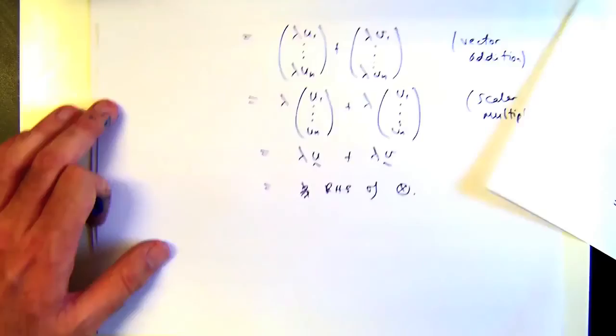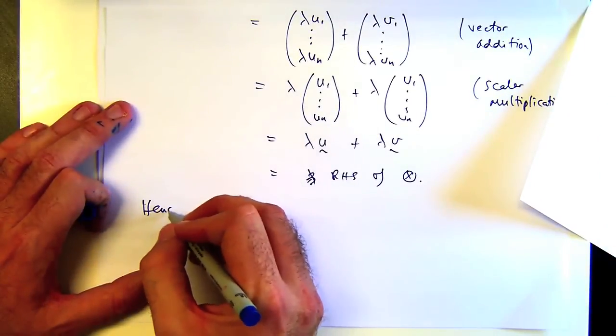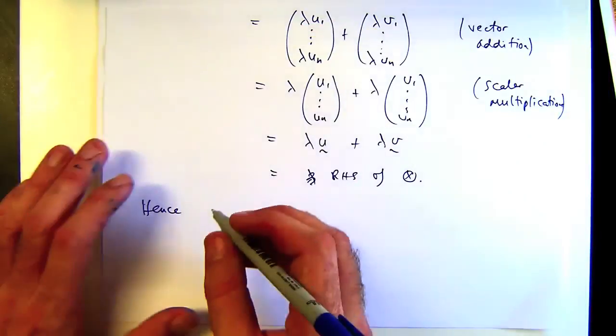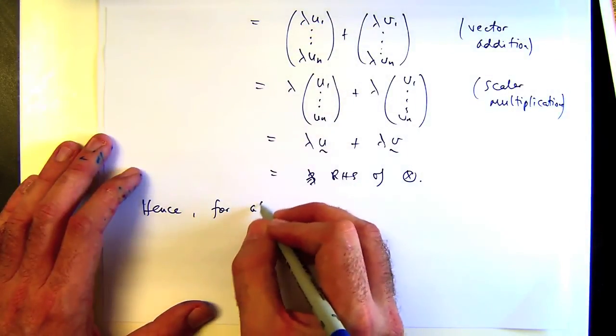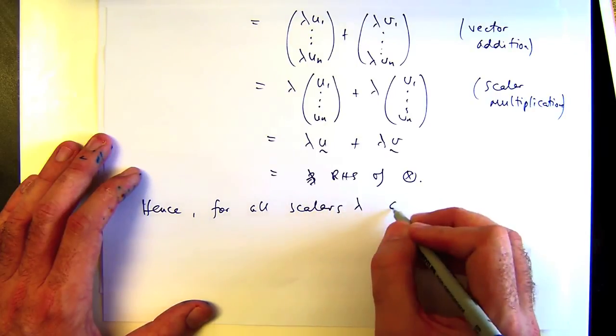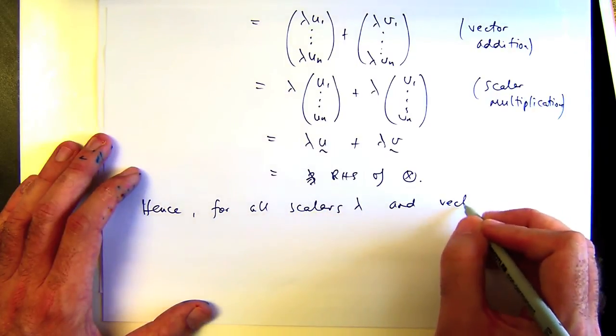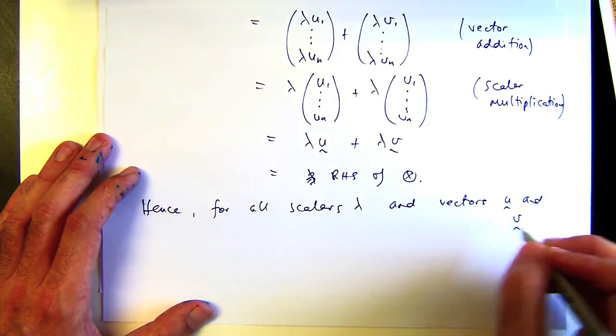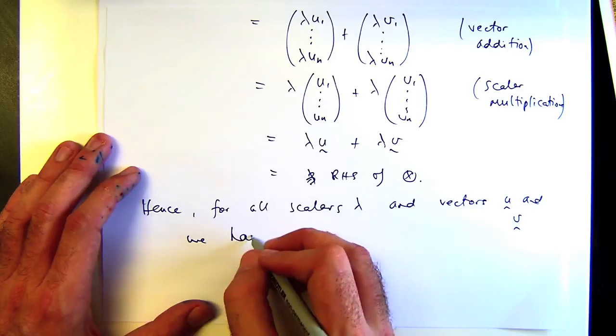So hence, let me make a nice conclusion here, because I didn't spend too much time talking about what everything is. For all scalars lambda and vectors u and v, we have star holding.